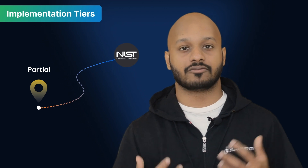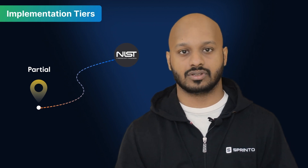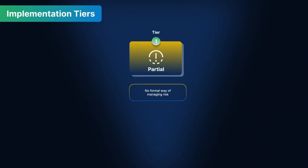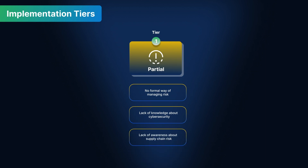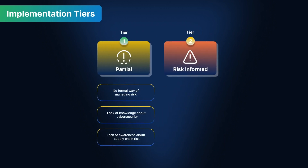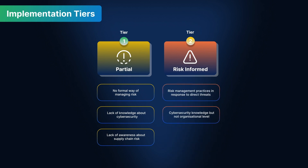Partial is considered the starting point for your CSF journey. You have no formal way of managing risk, there's not a lot of knowledge in your organization about cybersecurity, and there's little awareness of the supply chain risk of the products you use or provide. Risk-Informed is where you see a little more consistency. Risk management practices occur in response to indirect threats. There is knowledge about cybersecurity, but maybe not on an organizational level, and there is awareness about supply chain risks, but they're not necessarily acted upon.